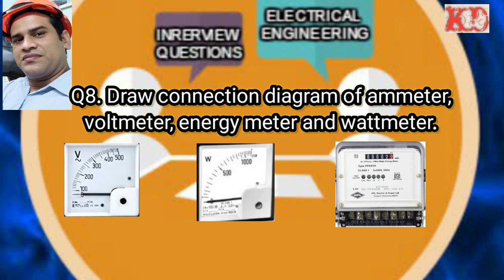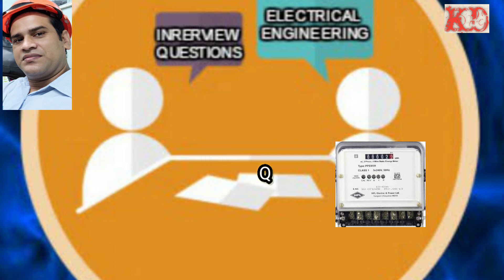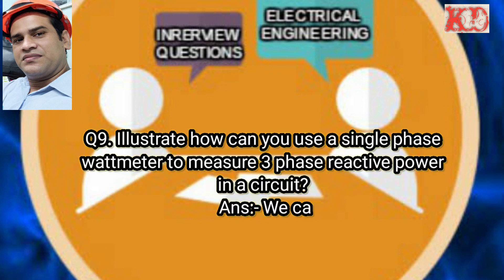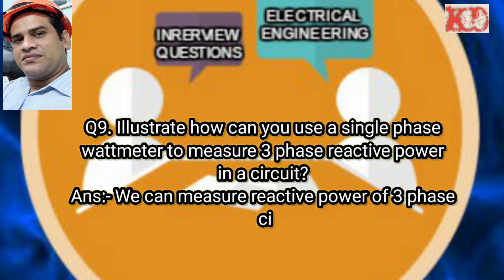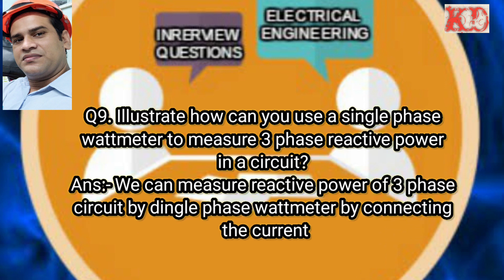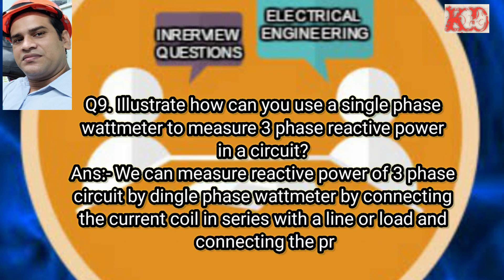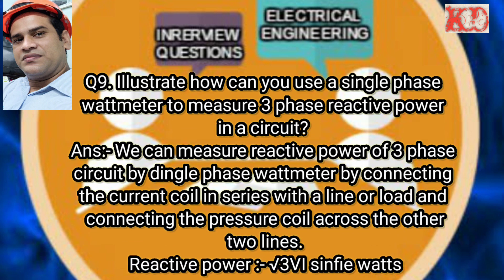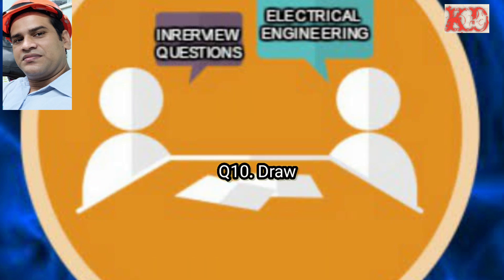Question number eight: Draw a connection diagram of ammeter, voltmeter, energy meter, and wattmeter. You can see the diagram of ammeter, voltmeter, energy meter, and wattmeter. Question number nine: How can you use a single-phase wattmeter to measure three-phase reactive power? Answer: We can measure reactive power of a three-phase circuit by a single-phase wattmeter by connecting the current coil in series with a line or load and connecting the pressure coil across the other two lines. The reactive power equals root 3 × V × I × sin φ.